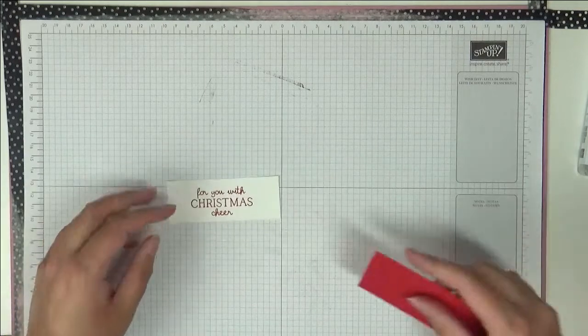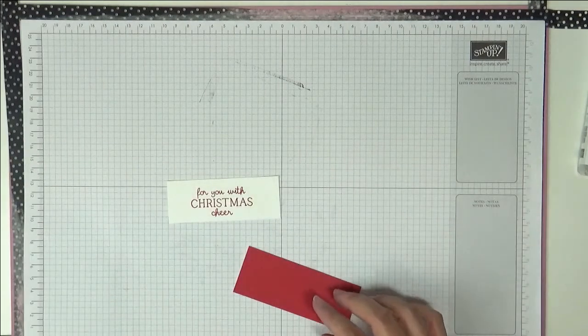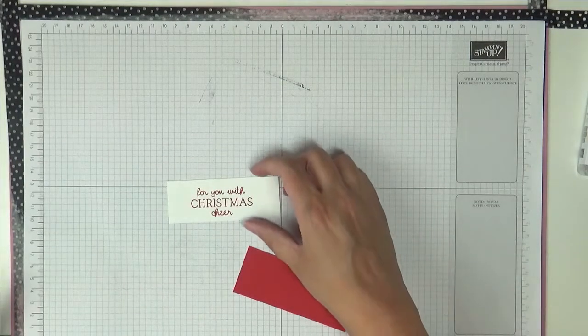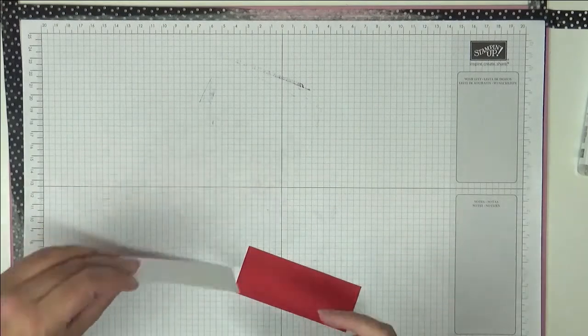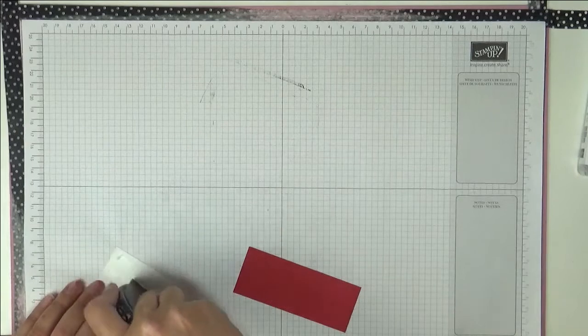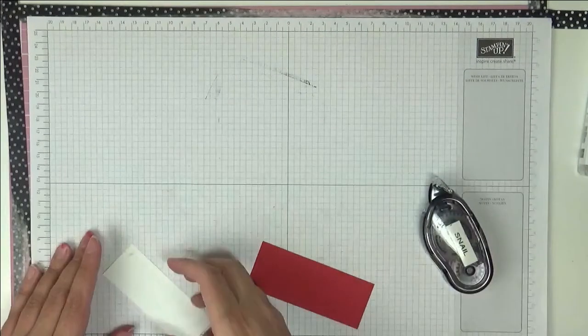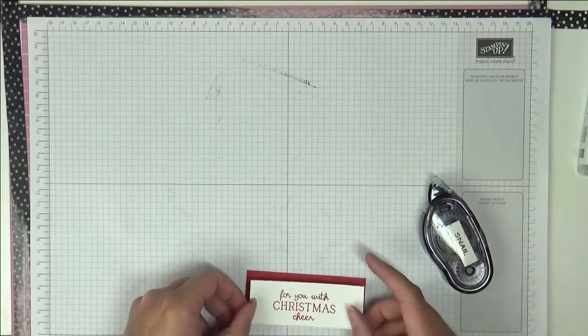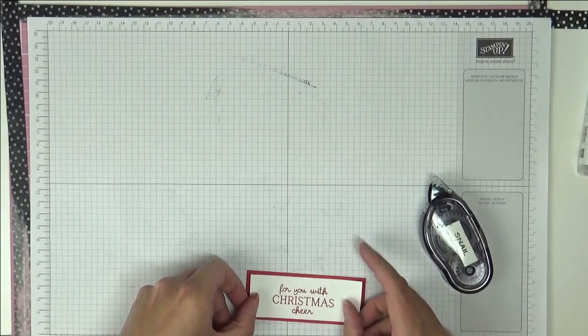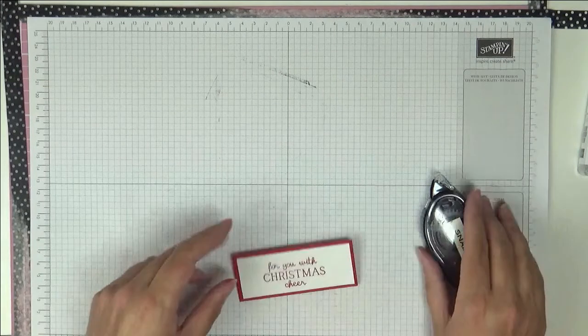So this is a piece of Whisper White and I've got a piece here of Real Red. The Whisper White piece measures nine and a half by three and a half, and the Real Red is ten by four. I'm just going to stick one to the other for now. So we have a nice mat.